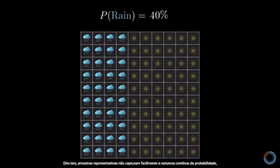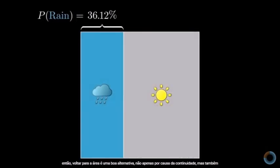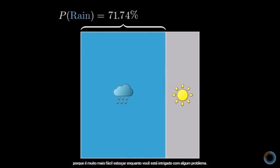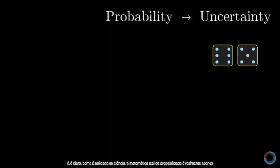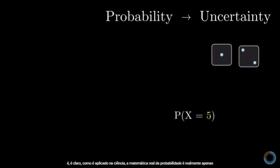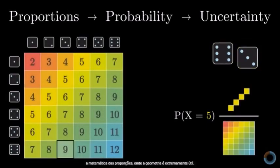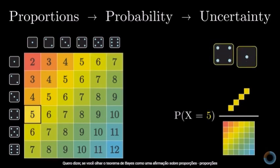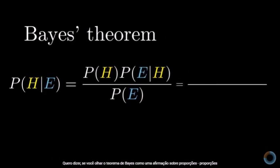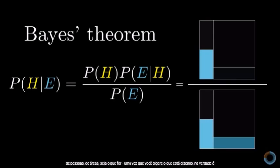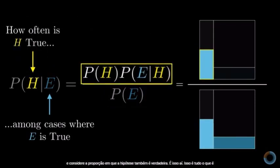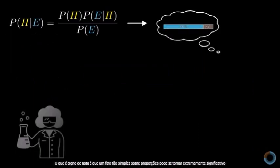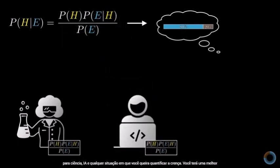Representative samples don't easily capture the continuous nature of probability, so turning to area is a nice alternative — both for continuity and because it's easier to sketch with pencil and paper. People often think about probability as the study of uncertainty, and that is how it's applied in science, but the actual math of probability — where all the formulas come from — is just the math of proportions. In that context, turning to geometry is exceedingly helpful. Bayes' theorem as a statement about proportions — once you digest what it's saying, it's actually kind of obvious. Both sides tell you to look at the cases where the evidence is true, and consider the proportion of those cases where the hypothesis is also true. The right-hand side just spells out how to compute it.